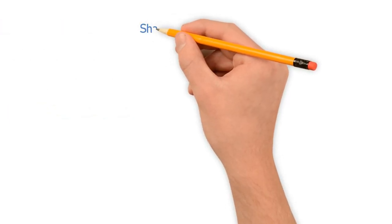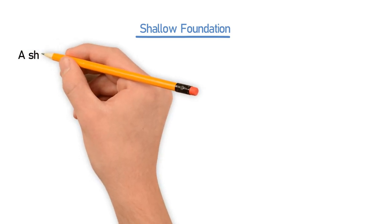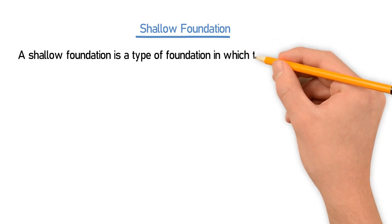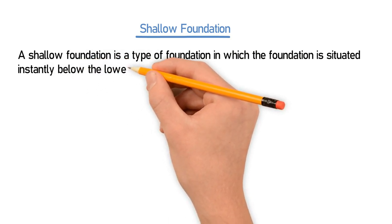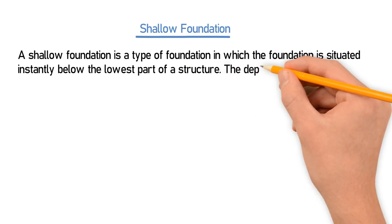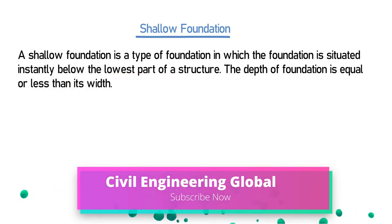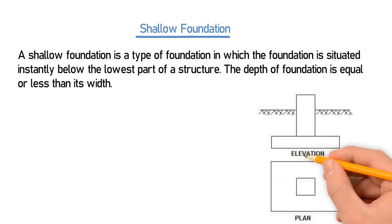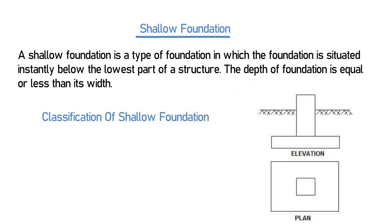A shallow foundation is a type of foundation in which the foundation is situated immediately below the lowest part of a structure. The depth of the foundation is equal to or less than its width. As you can see in this example, the depth of the foundation from the ground level will be less than or equal to the width of the foundation.